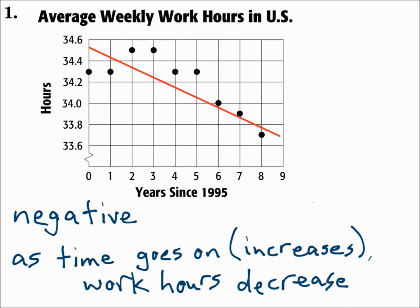Look at the points. See if there's a line that can be drawn through or close to most of them. If it goes up left to right, it's a positive correlation. If it goes down left to right, it's a negative correlation.